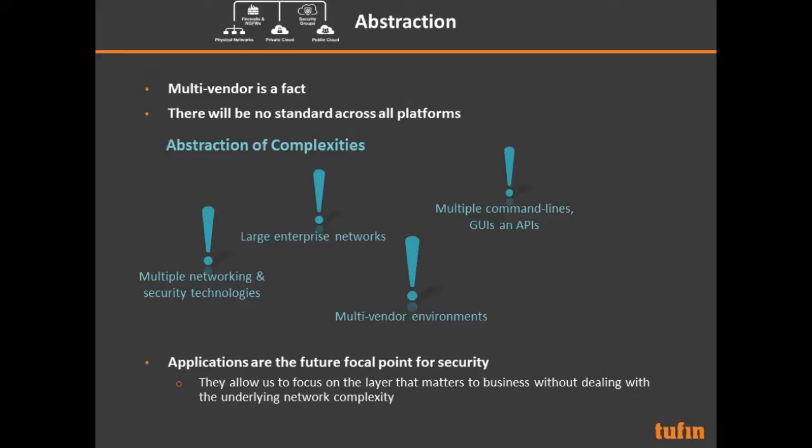Abstraction is also important. Multi-vendor is a fact — you'll have a cloud provider, various firewalls, routers, and switches, with no standard across all platforms. You have to abstract the complexities: different technologies, routing methods, and GUIs. The way to do this is to look at connectivity from the application perspective. The business thinks in terms of applications, and if you're looking at firewall rules without seeing the applications those rules serve, you're not seeing the right picture. Start with applications first, see all connections required for those apps, and how they translate to actual rules on your firewalls, routers, and switches.